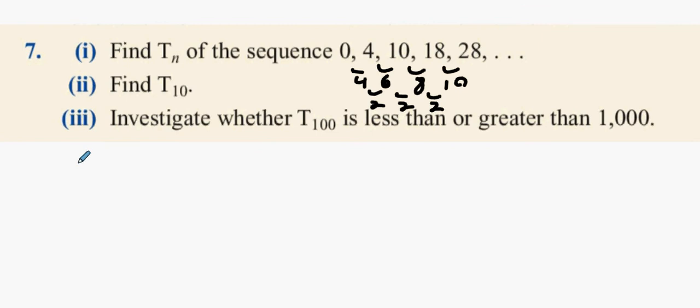The TN formula is AN squared plus BN plus C. What's the A value only for quadratic sequences? Half the second difference. So what's a half of 2? 1. So TN is now N squared plus BN plus C.